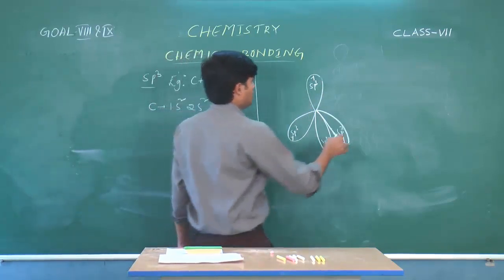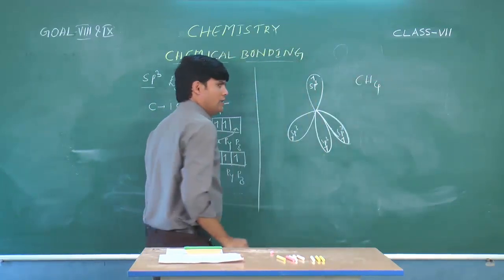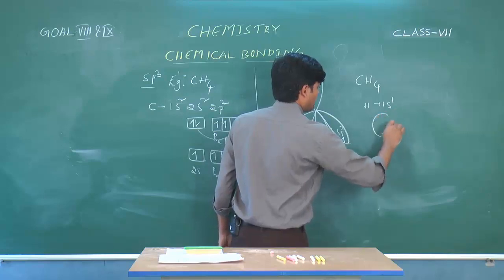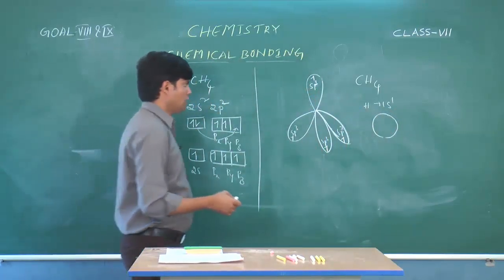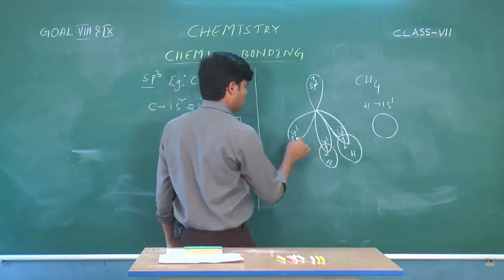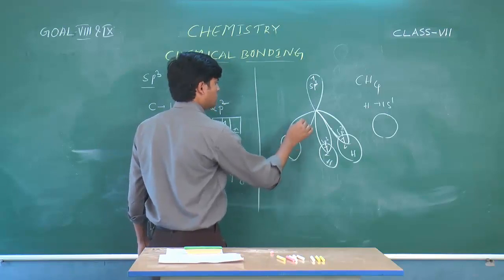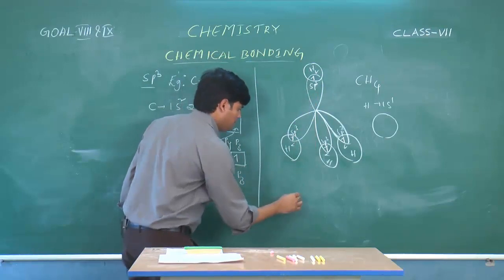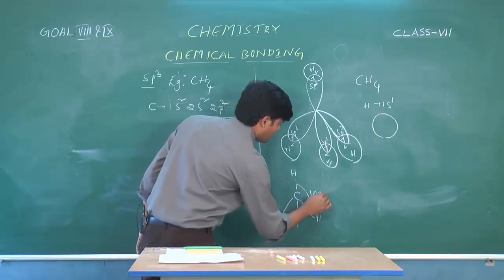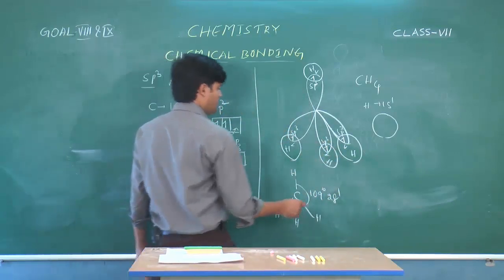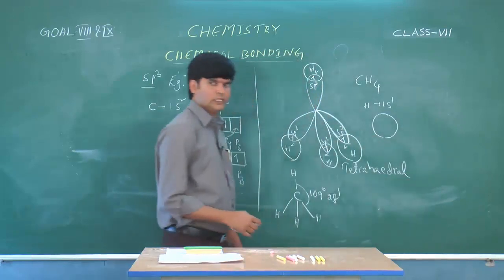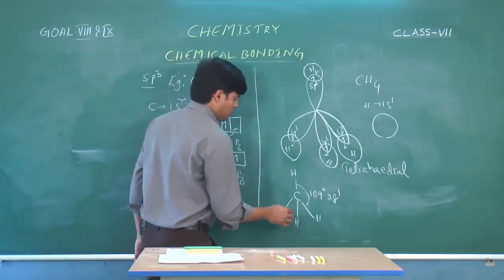Now, hydrogen atoms are attached to carbon. Hydrogen's electronic configuration is 1s¹, and the shape of the s orbital is spherical. That spherical hydrogen orbital combines with each SP3 hybrid orbital, forming 4 sigma bonds. The bond angle between them is 109 degrees 28 minutes, and the shape of the molecule is tetrahedral — so this hybridization is called tetrahedral hybridization.